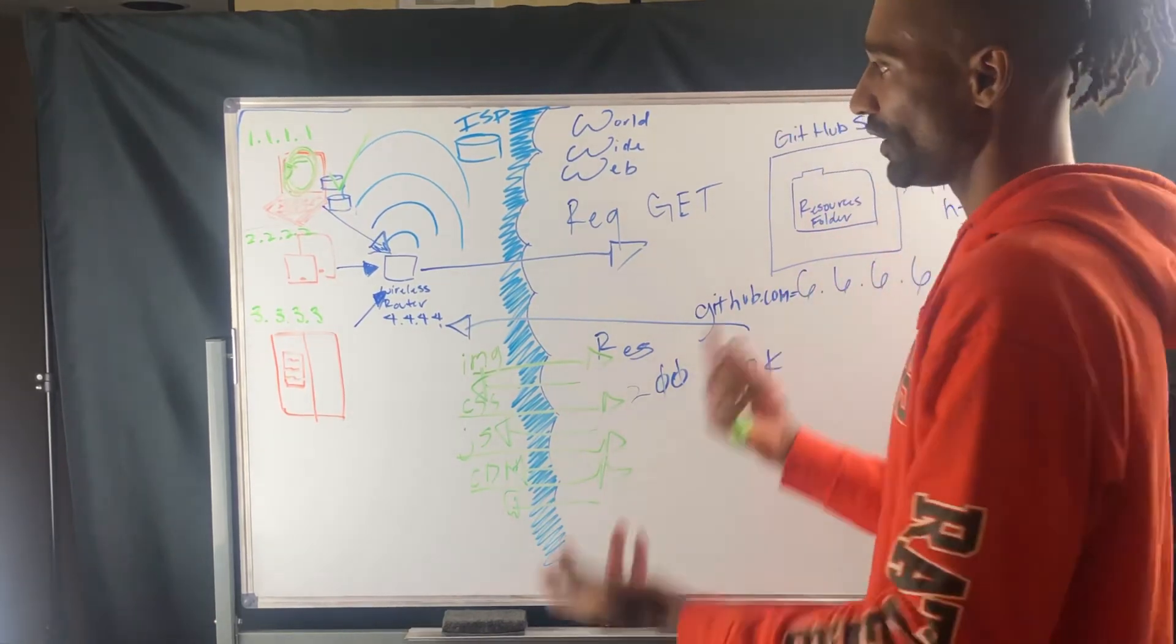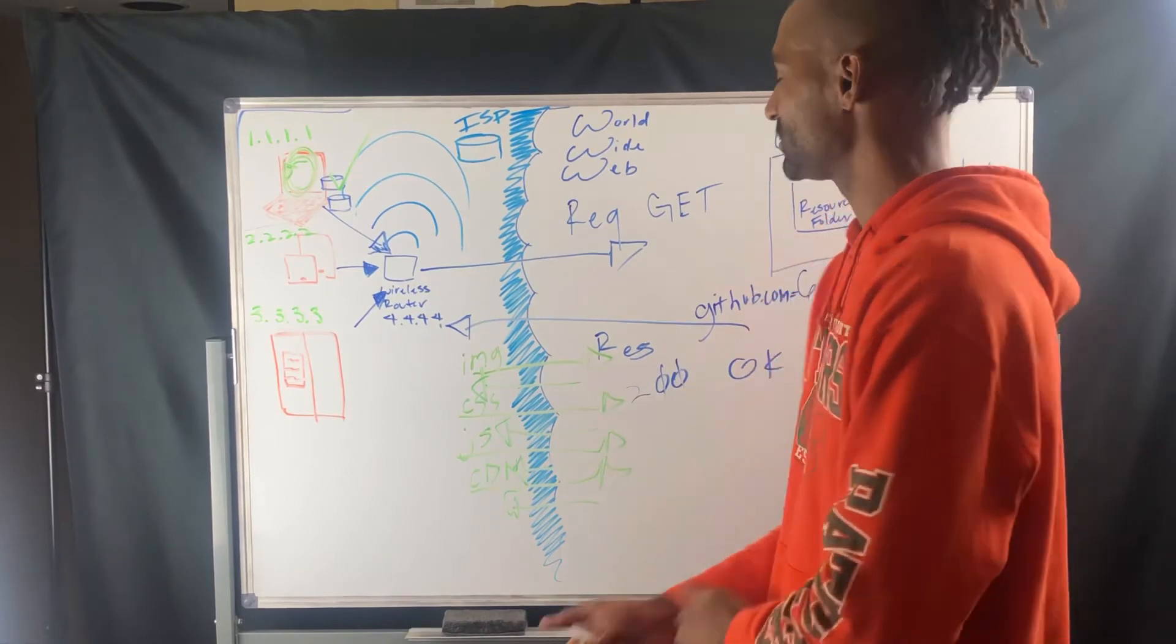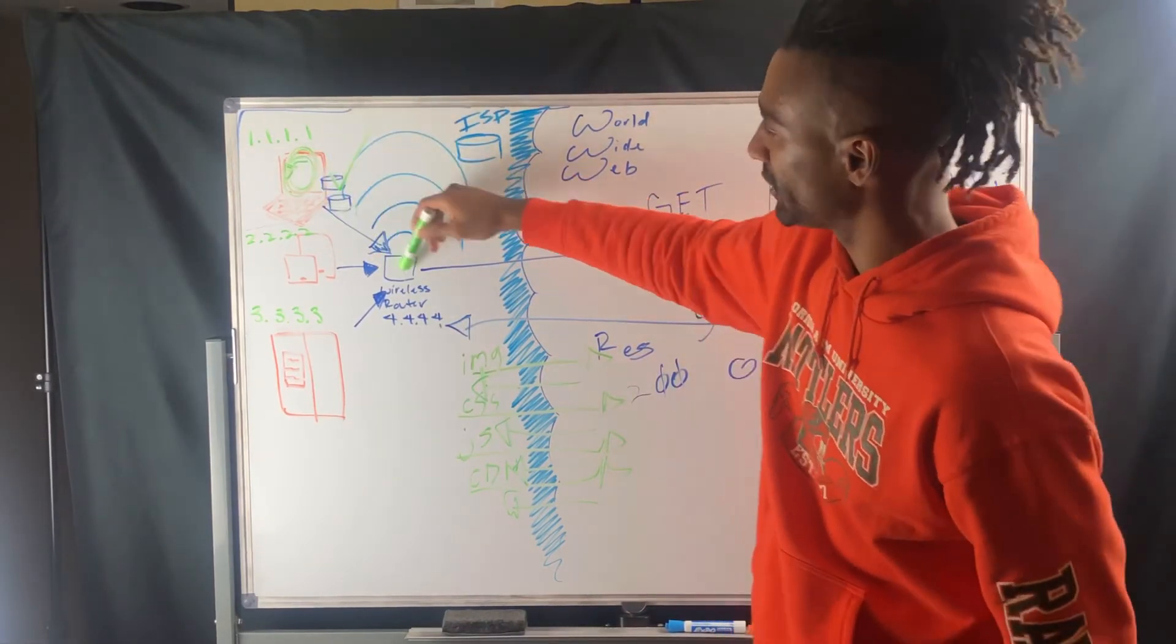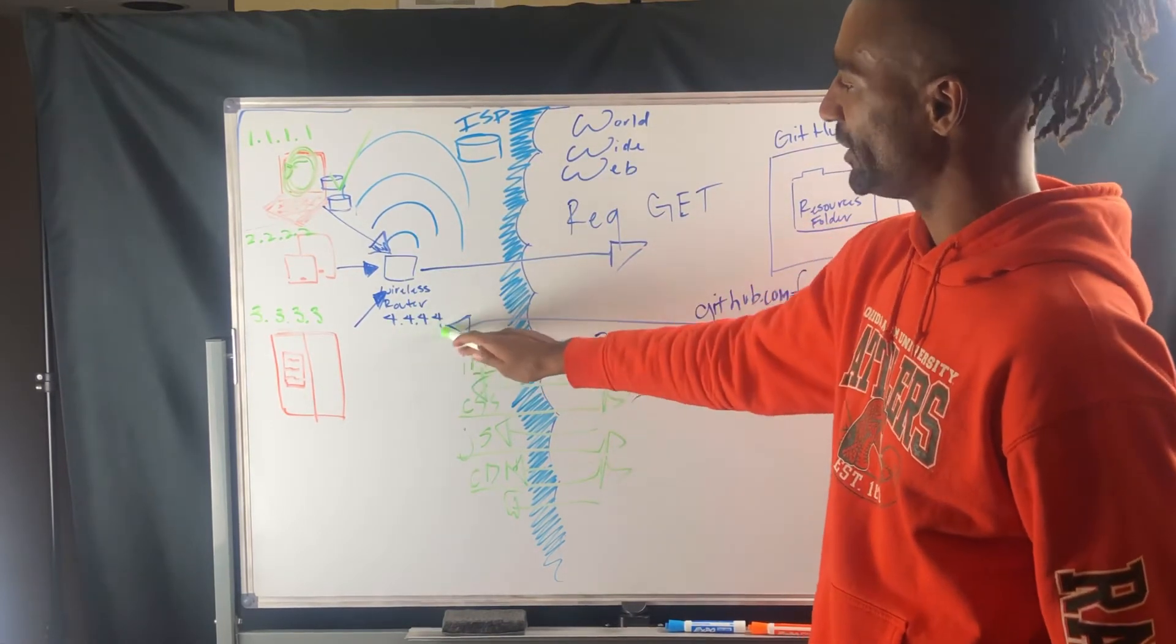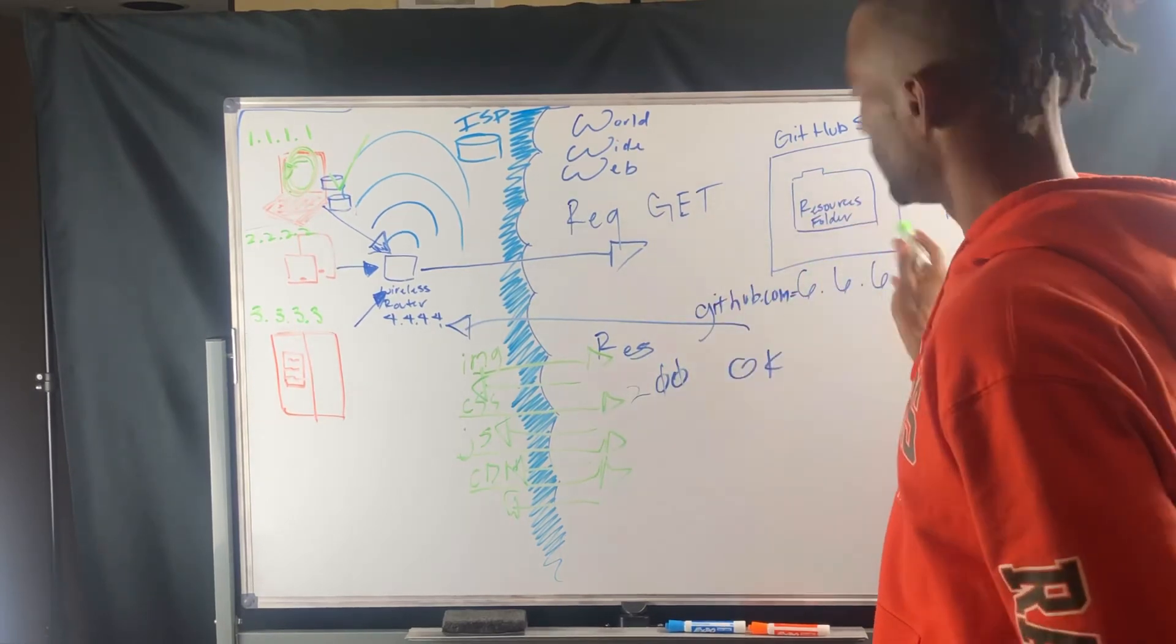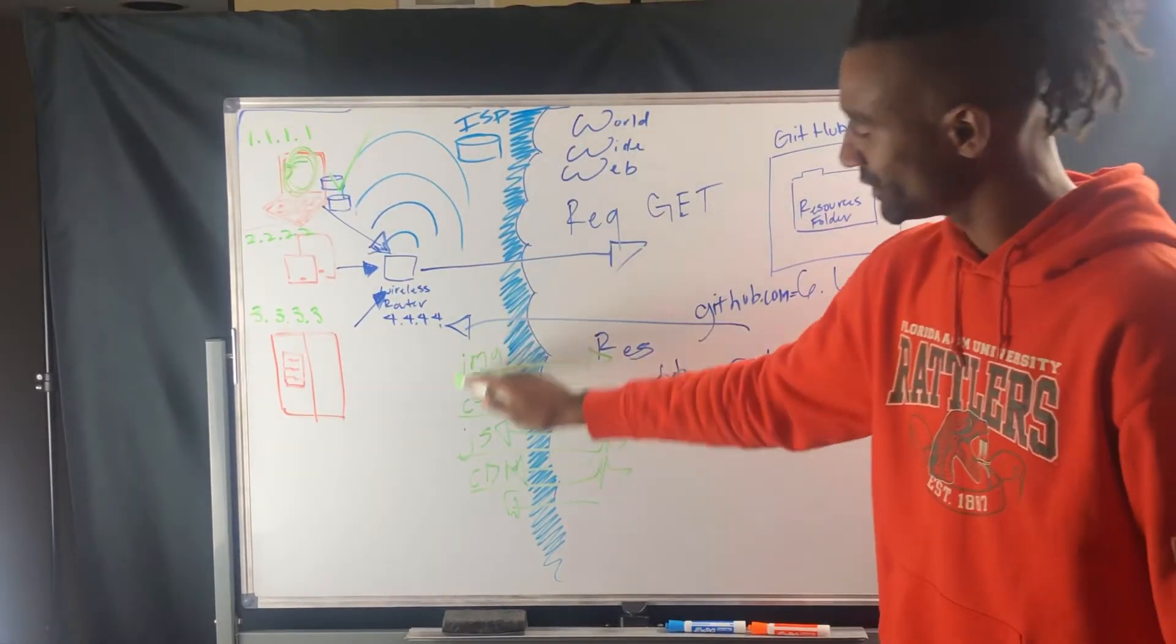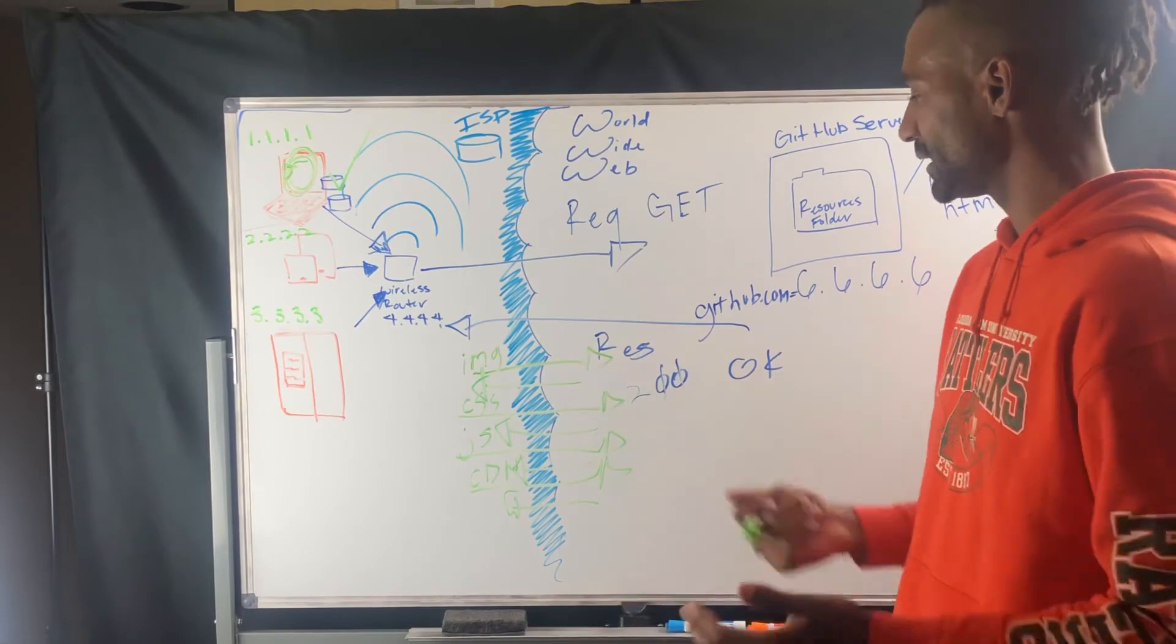And that's how you're able to keep track of those different connections and relationships. Once you make a request from your local machine, it's going to go through your wireless router. And then your wireless router is going to be the representation of the IP address to make the request to the server on the internet. You get a response. You're going to start building the web page. And you're going to request additional resources. And that's kind of it.